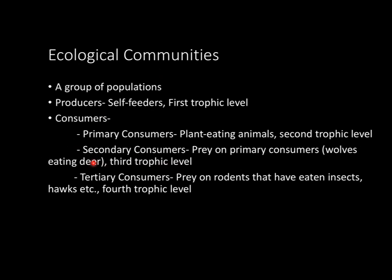A secondary consumer basically preys on primary consumers — so you can think of a wolf eating a deer — and they exist on the third trophic level. On the tertiary consumer level, that's basically a predator preying on a rodent that has already eaten insects. Think, for example, a hawk eating a rat that has already eaten an insect — that hawk would exist on the fourth trophic level.